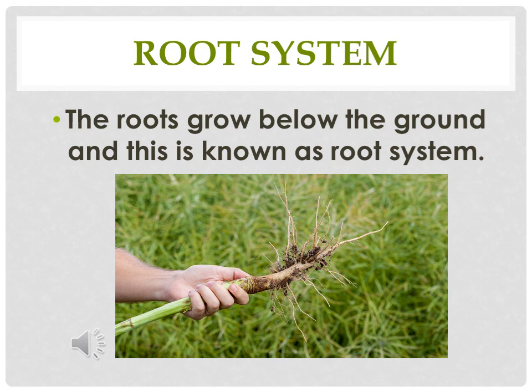The roots often extend far into the ground, spreading deep and wide to ensure the plant has plenty of food and drink within its reach. Small plants such as grasses have shallow roots — their roots are not too deep in the soil — while big plants have thick and deep roots with a complex root system.